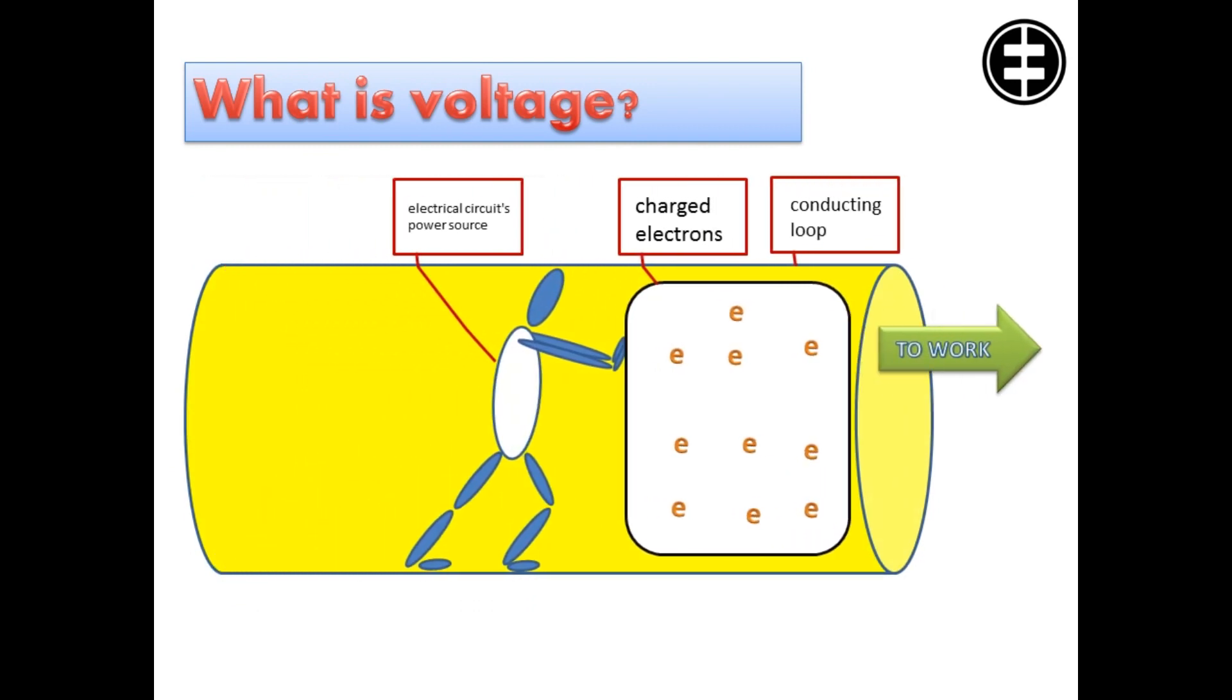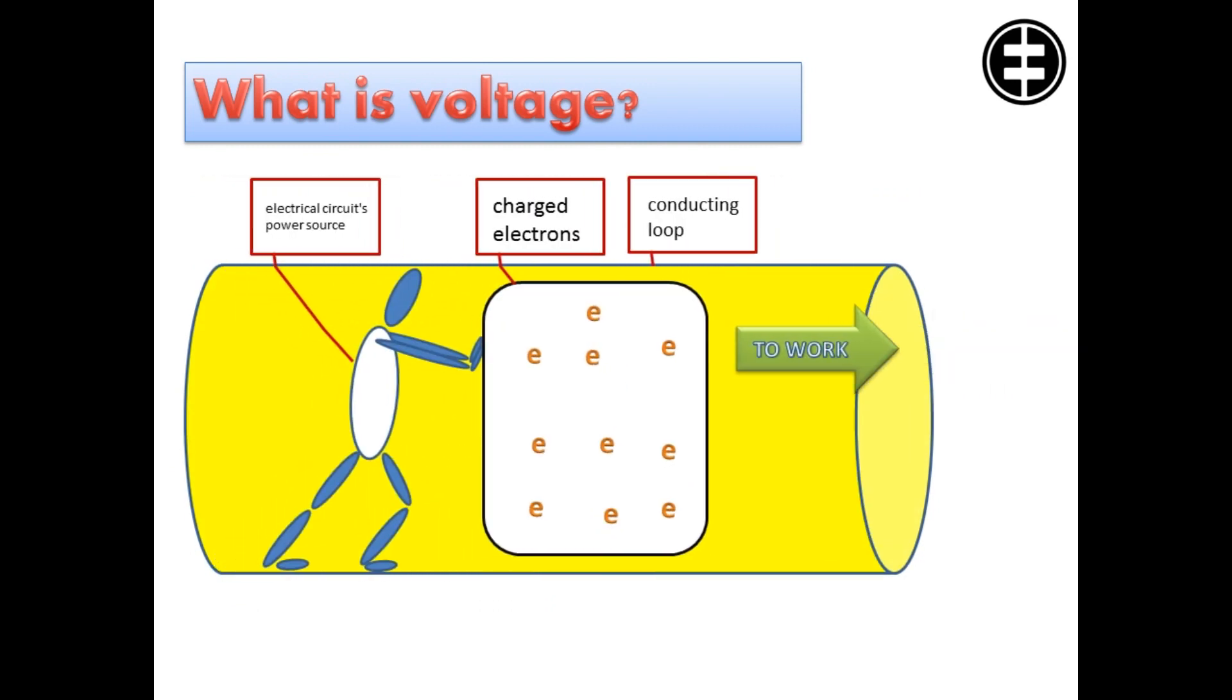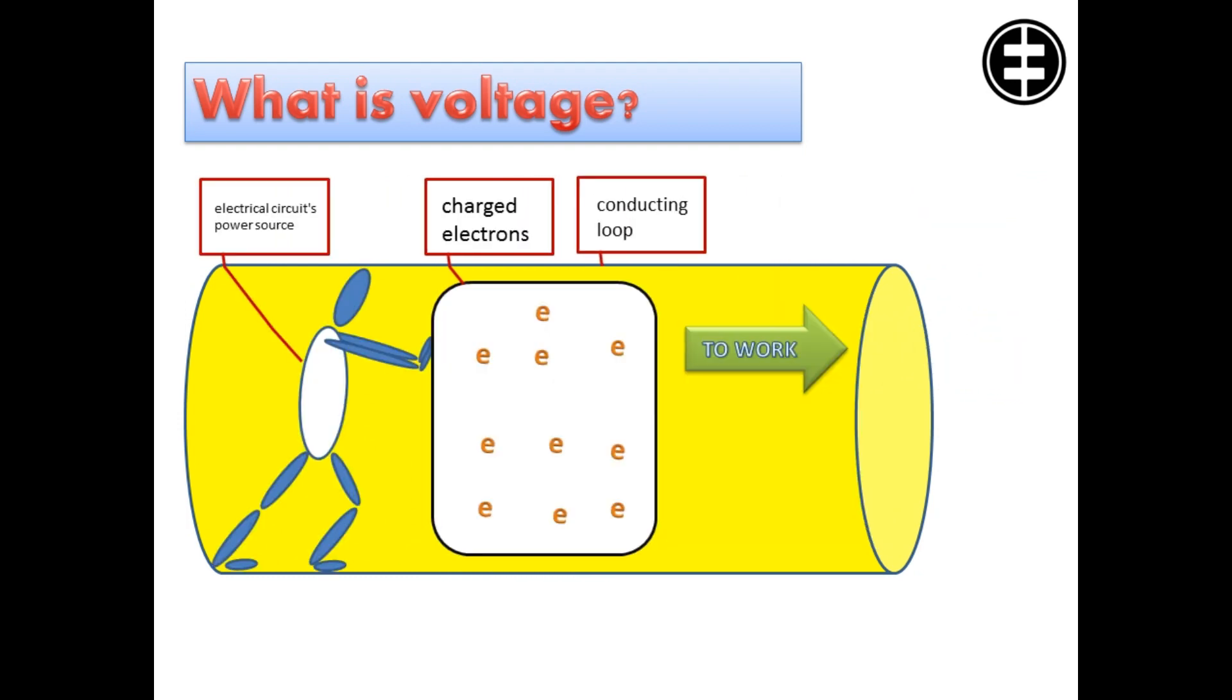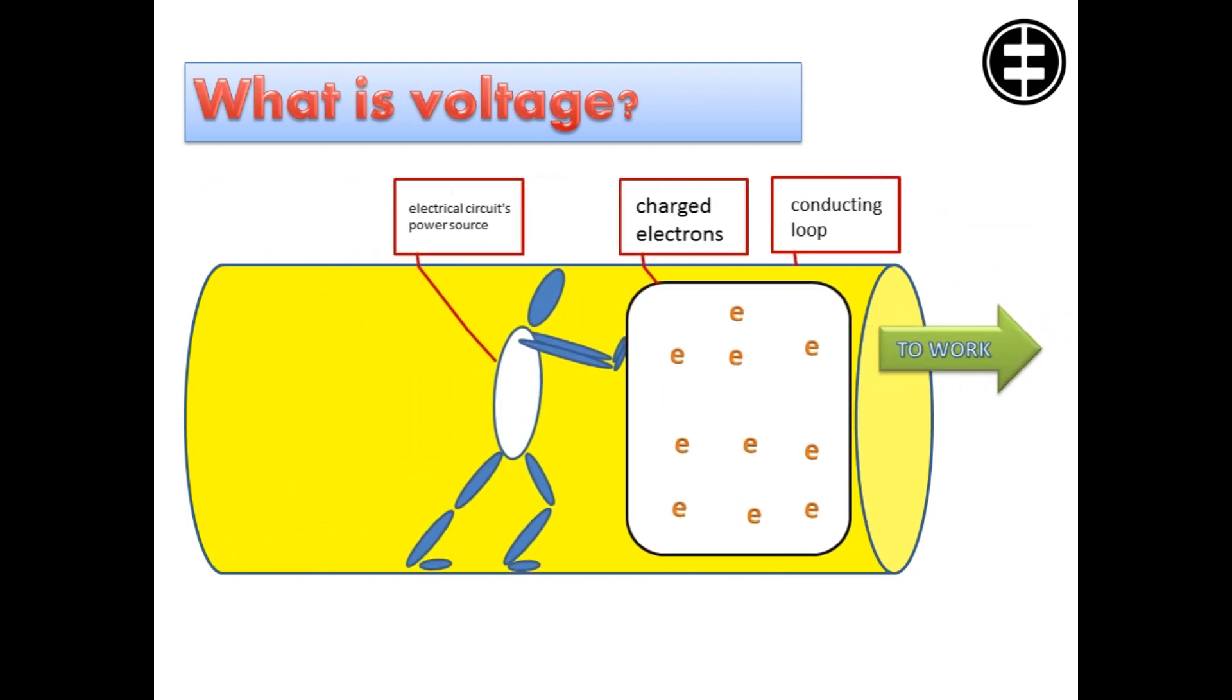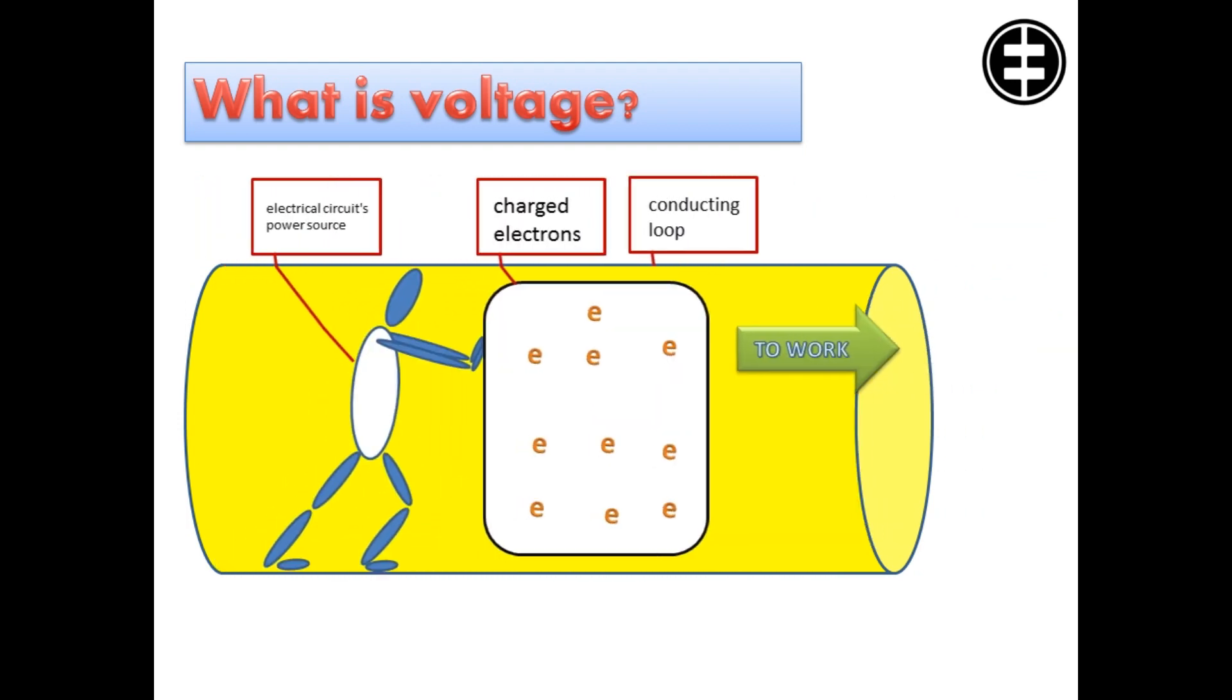Voltage is the pressure from an electrical circuit's power source that pushes charged electrons through a conducting loop, enabling them to do work such as illuminating a light.